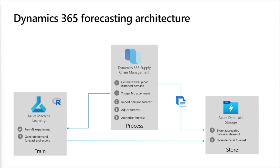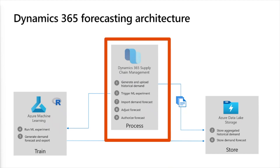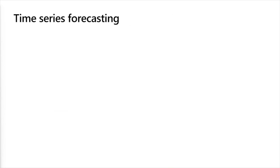Here we can see an architecture diagram of how forecasting works when we use Dynamics 365 Supply Chain Management. We use Dynamics, Azure Machine Learning, and Azure Data Lake to support this overall process. Today we will be focusing on the processes that take place in Dynamics 365. Our next Tech Talk in this series will focus on the other components in more detail. Azure Machine Learning uses the tool R, and specifically a package called Forecast, to generate the forecast equation. The main strategy used to generate forecasts in Dynamics 365 Supply Chain Management when we use Azure Machine Learning is time series forecasting.